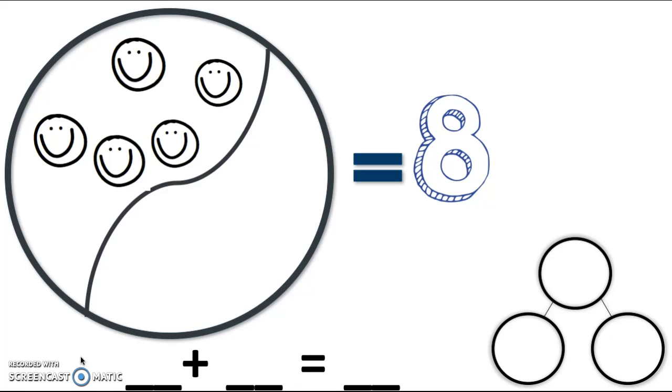For this one, I want you to try this whole thing by yourself. Now, I have one, two, three, four, five. I have a circle with five smiley faces in there. I want you to go ahead and draw circles to equal eight, starting at five. Then try to do a number sentence and a number bond to match that. Press pause. That's a lot of work to do, but you can do it. Press pause to find that unknown, and then press play to check yourself.